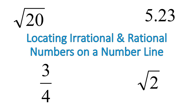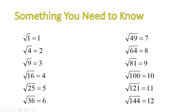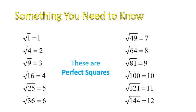A couple of things we need to know before we get started. Number one, you'll need to know perfect squares. We will use them to locate irrational numbers on a number line — we'll be using them to estimate irrational numbers, so you need to know the list of perfect square numbers and how we find the square root of them to get nice numbers.